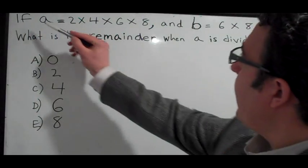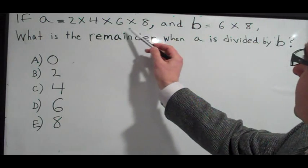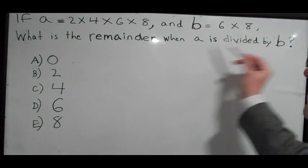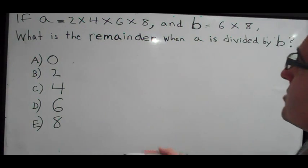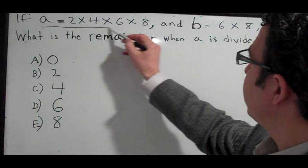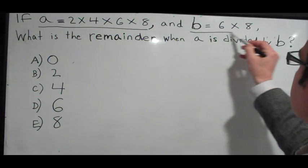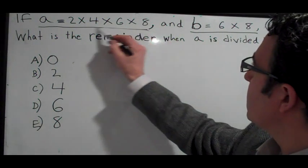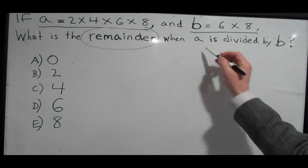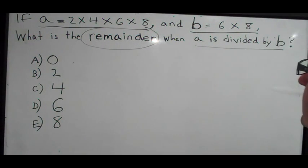For example, if A equals 2 times 4 times 6 times 8 and B equals 6 times 8, what's the remainder when A is divided by B? So what's important in this question? Well, we need to know A, so we're going to underline that, and B is 6 times 8. What is the remainder? I'm going to circle the remainder here when A is divided by B.